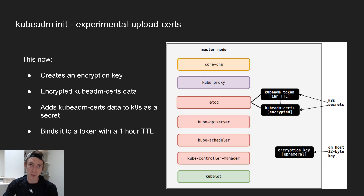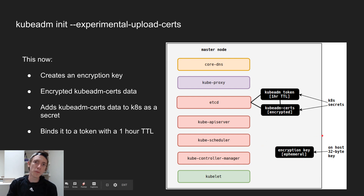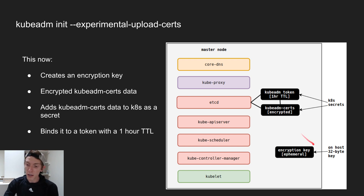And this is where the new feature comes in. KubeADM init now has an experimental upload-certs flag. What this is going to do is — assuming we're doing init — create all the main components we talked about, but it's also going to create a 32-byte encryption key. That encryption key is going to be used to fully encrypt the data inside of something called kubeadm-certs, which contains all of the etcd, API server, and more certificates and keys that are needed to add new masters.